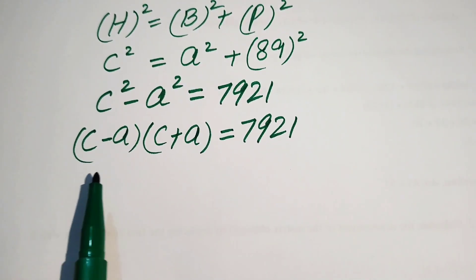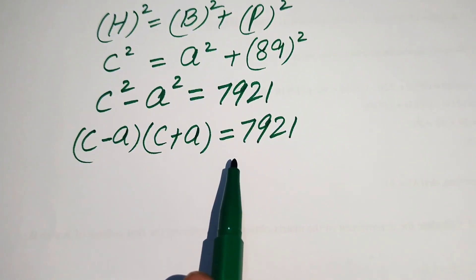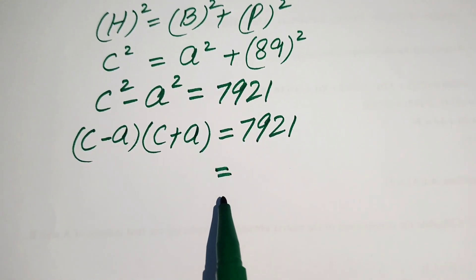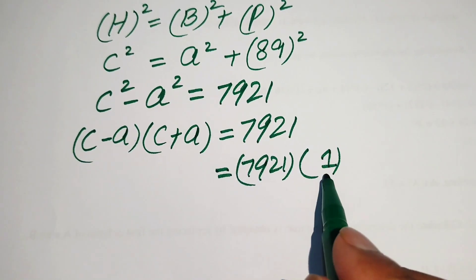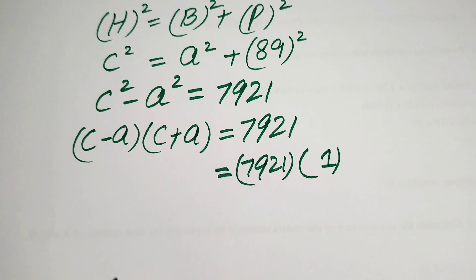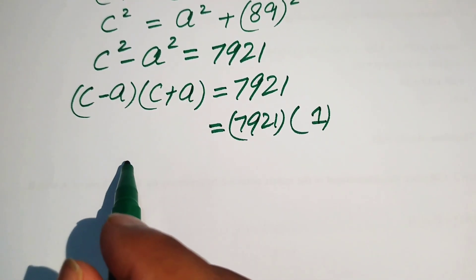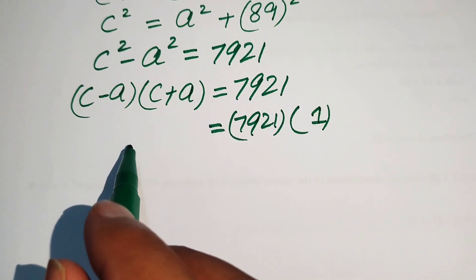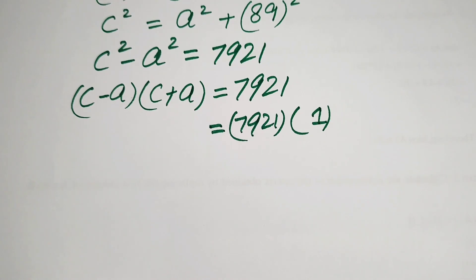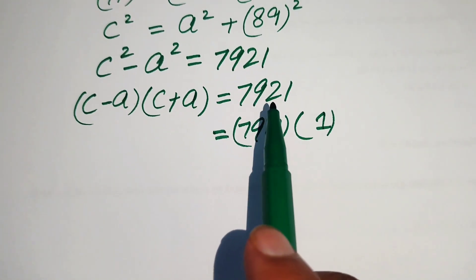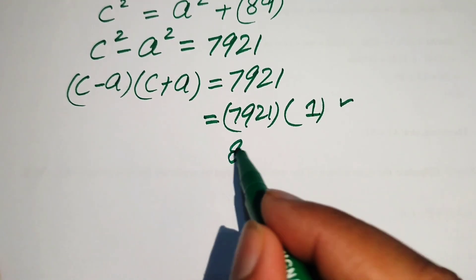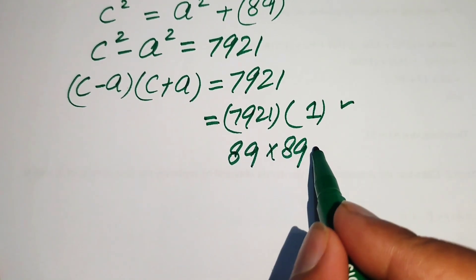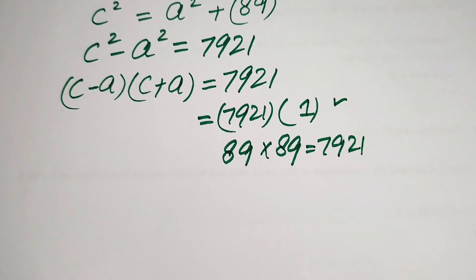On the left-hand side we have two factors multiplied together, but on the right we have only one factor, 7921. So we express 7921 as a product of two factors. The first possibility is 7921 × 1, and the second possibility is 89 × 89, which also equals 7921. These give us two cases to consider.